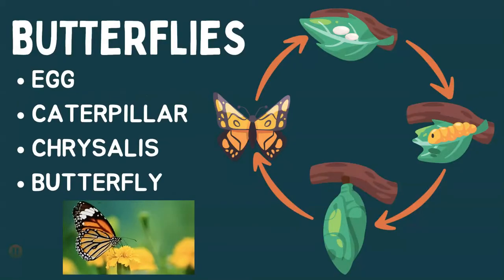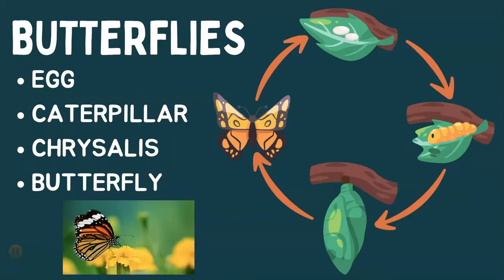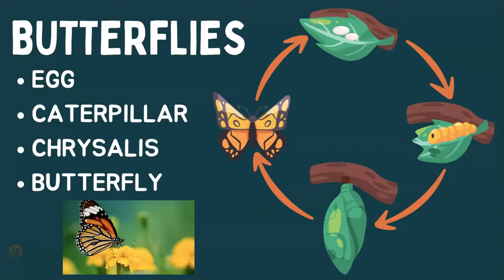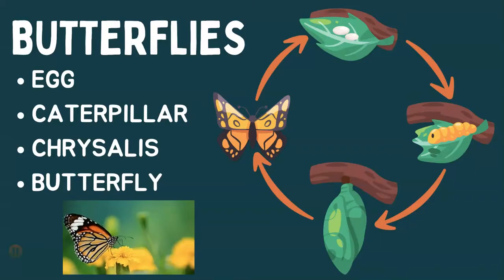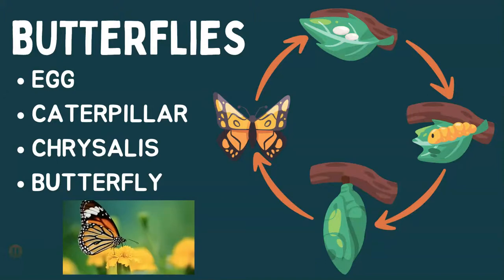Different organisms have different life cycles and they can be similar but they're also different. First, let's look at this animal — a butterfly. These beautiful insects start their life as tiny eggs.